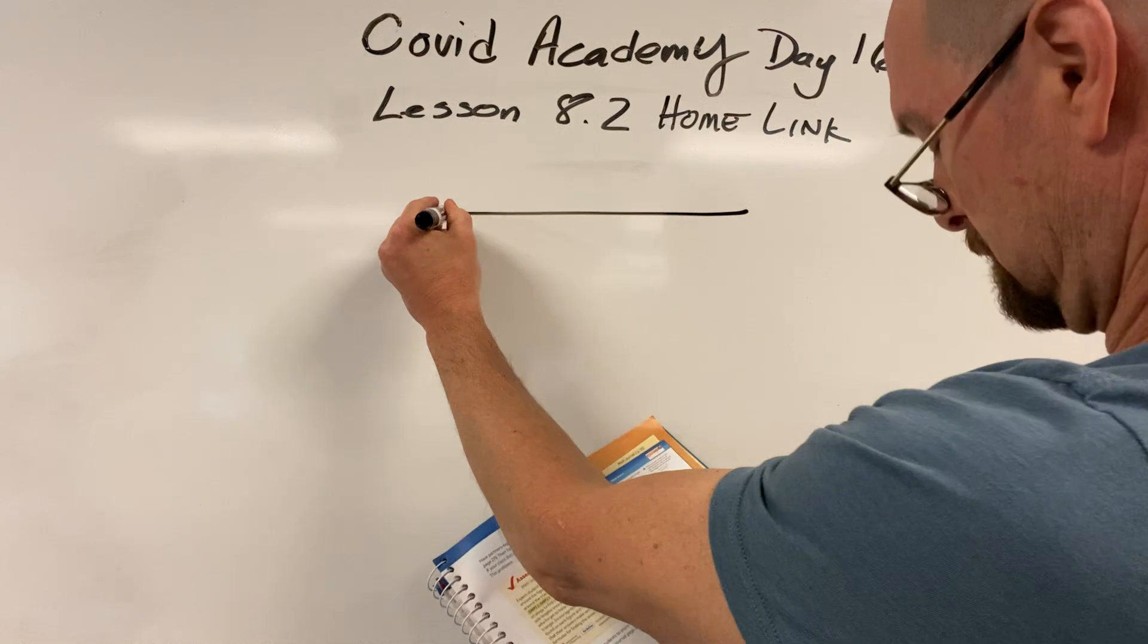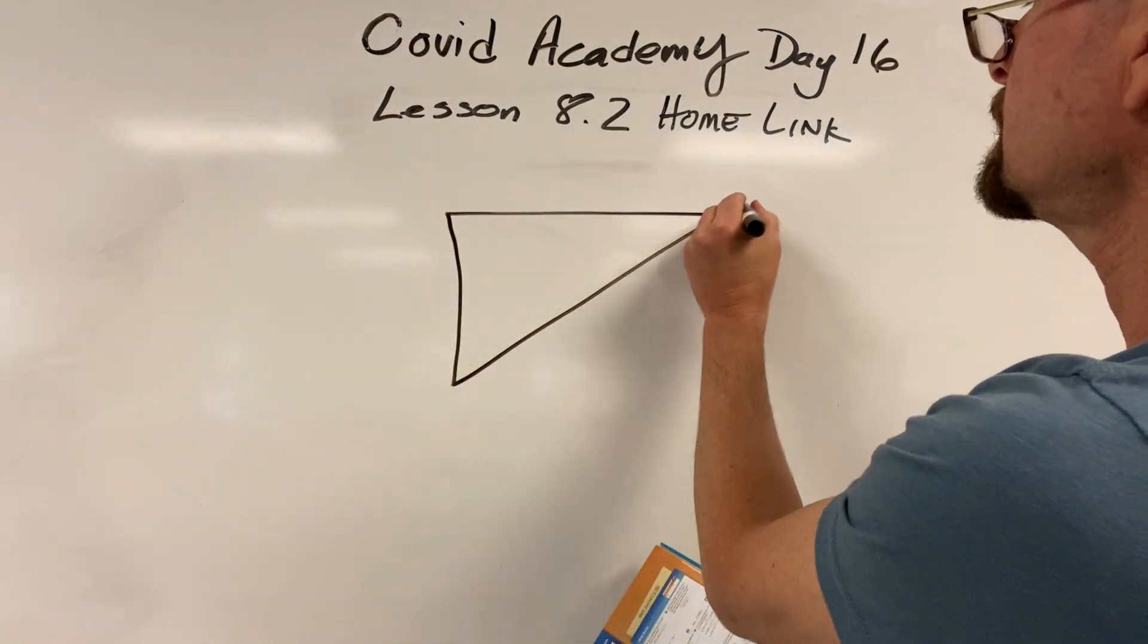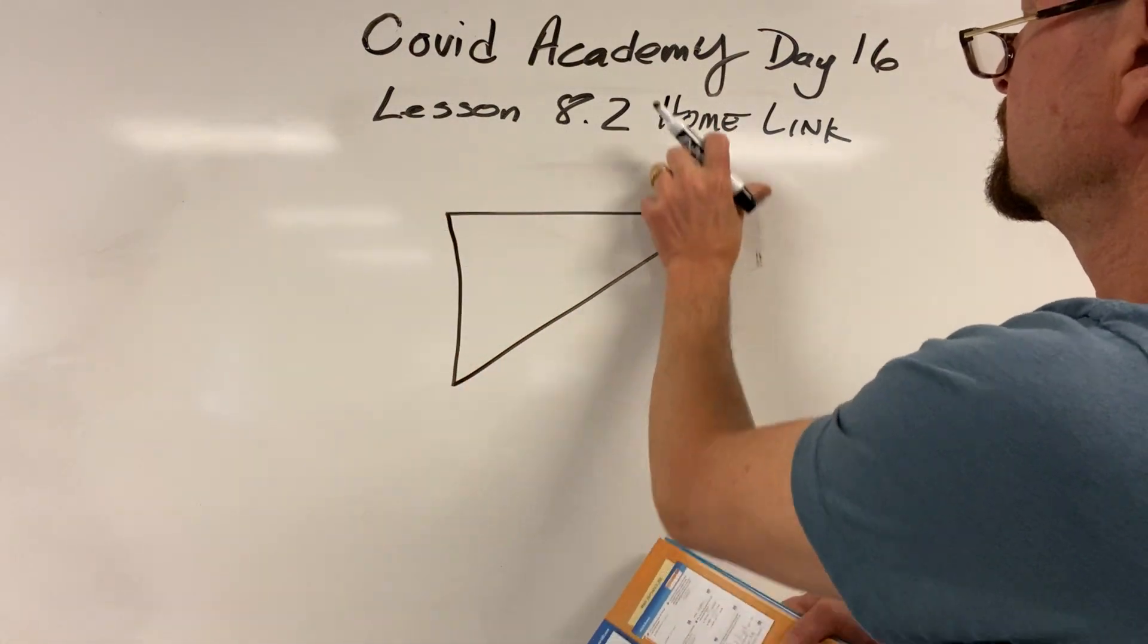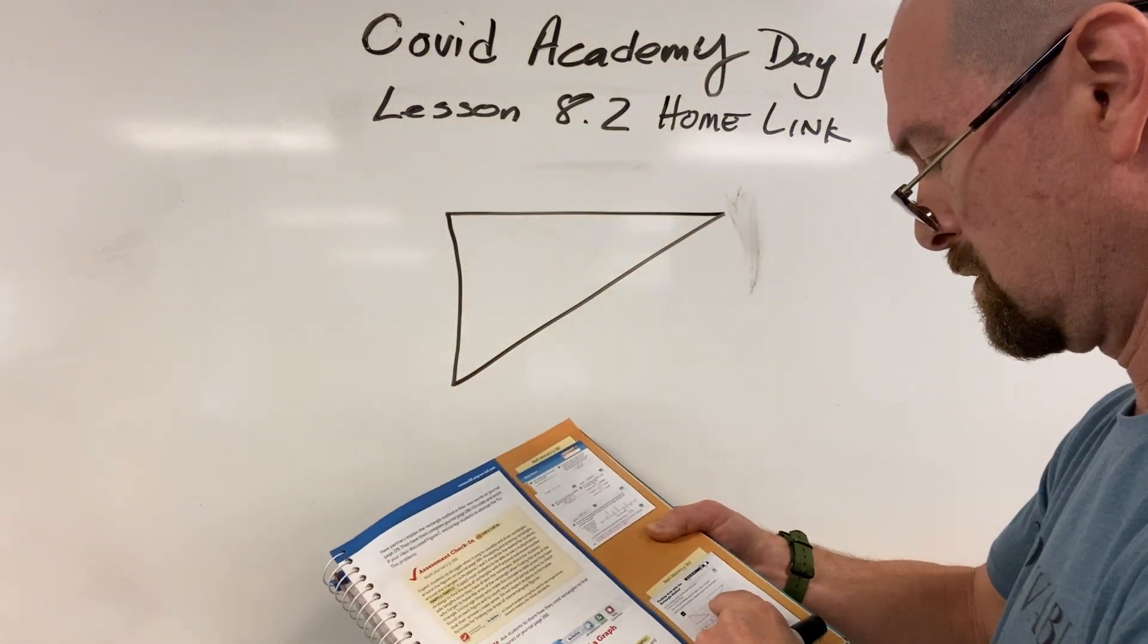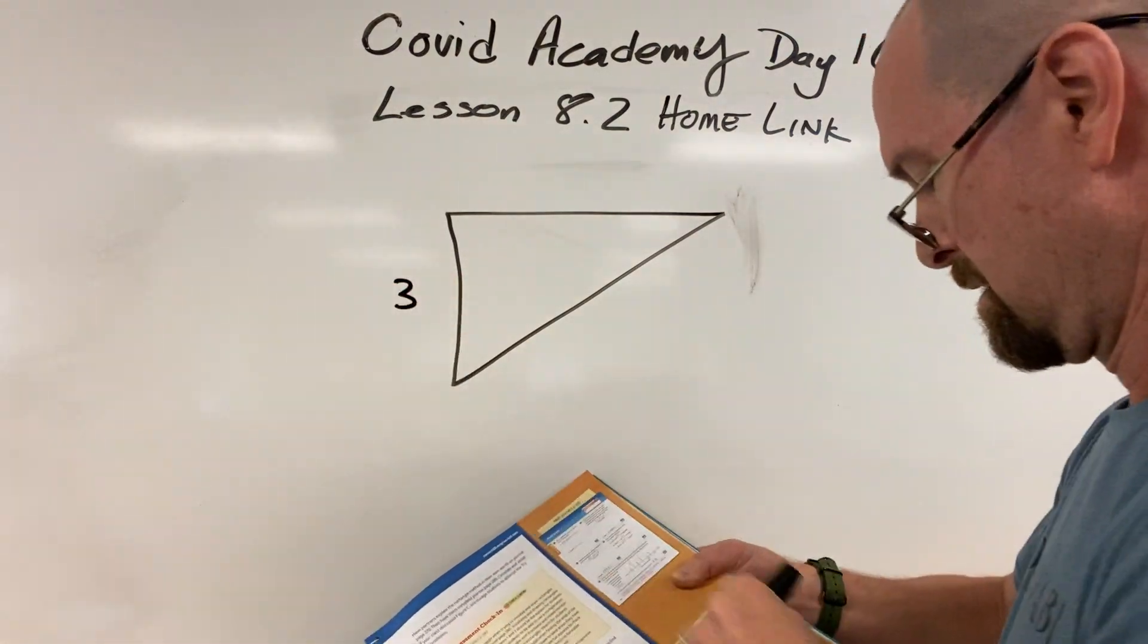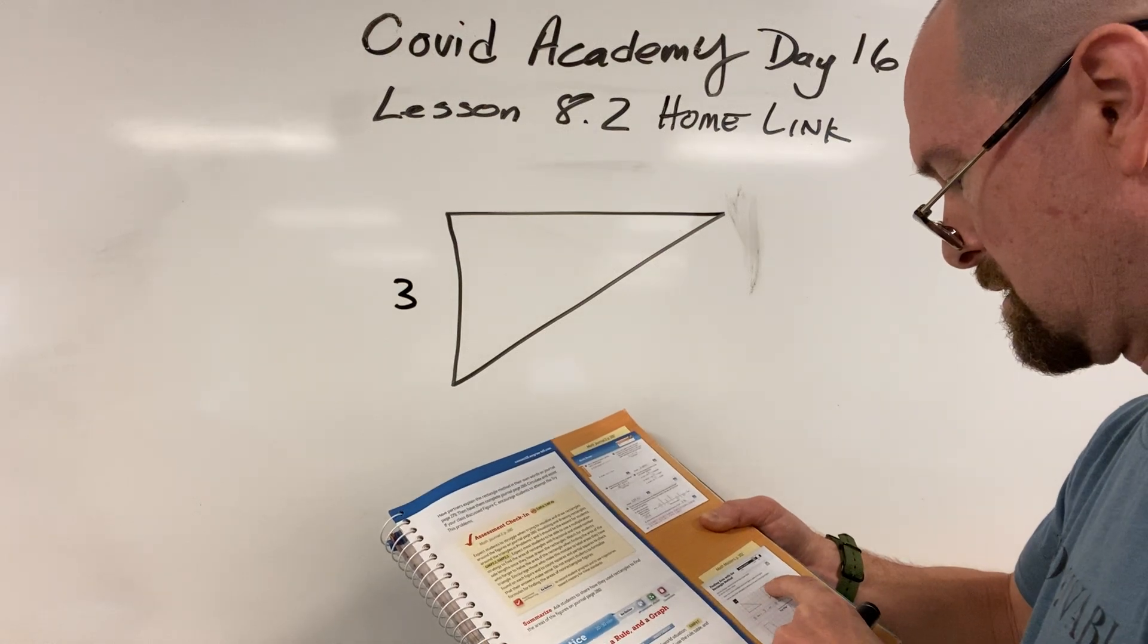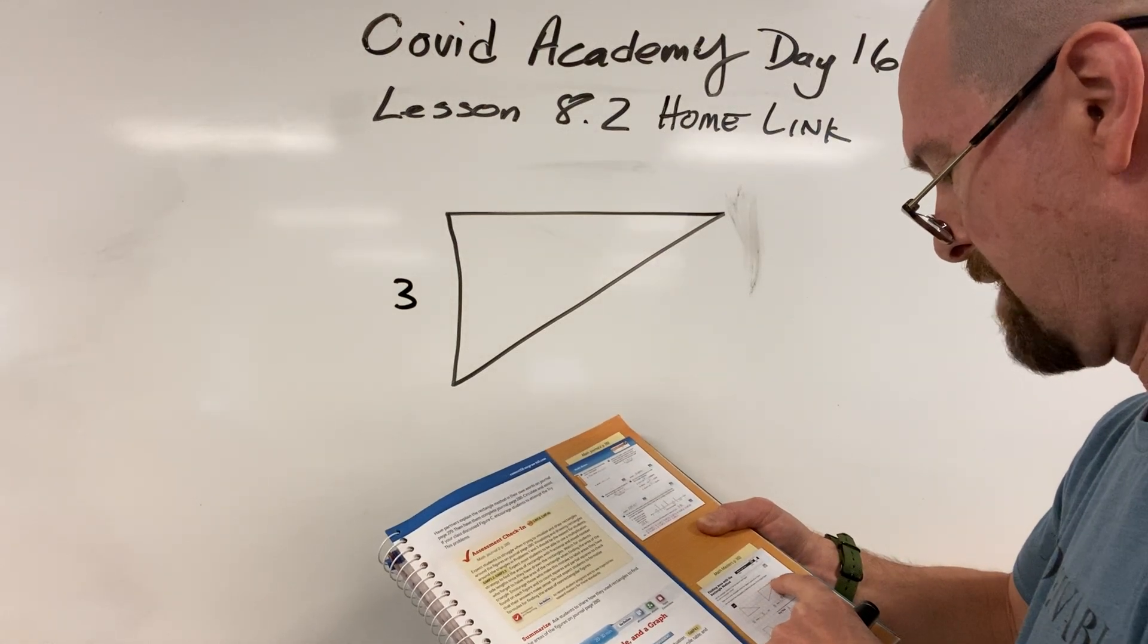Alright. Oh, difficult mess. Alright. How tall is that thing over here? 1, 2, 3. That was easy. Now, 1, 2, 3, 4, 5 and a half.